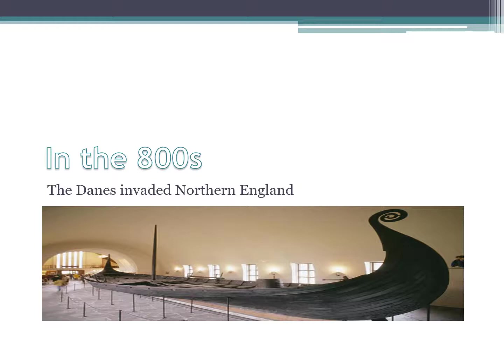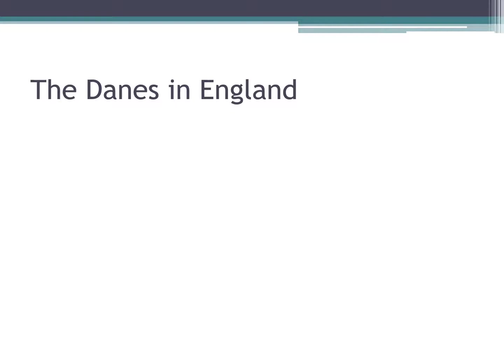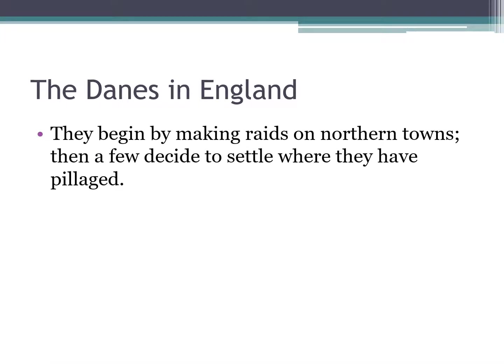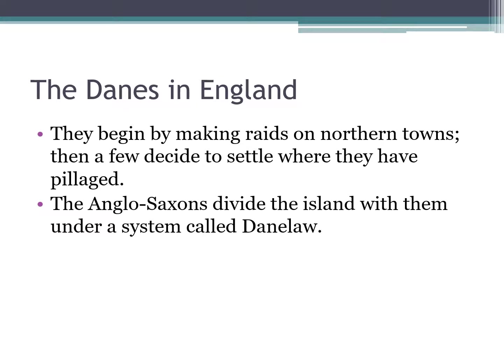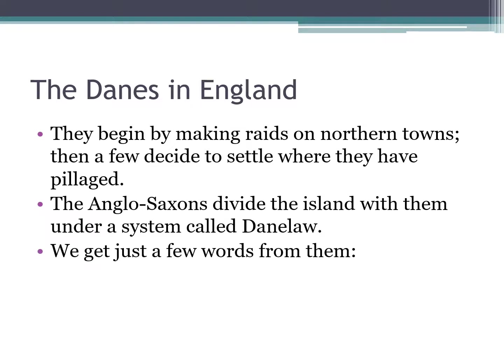The reference to 'middle earth' in that poem is one that J.R.R. Tolkien used when he wrote The Lord of the Rings trilogy — he took that concept and created a land with elves and orcs and all the things he invented. In the 800s, the Danes — a southern group of Vikings — invaded northern England, coming in longboats, an advanced technology that allowed them to travel quickly for war. They began by raiding northern towns, but then some decided to settle where they had pillaged.